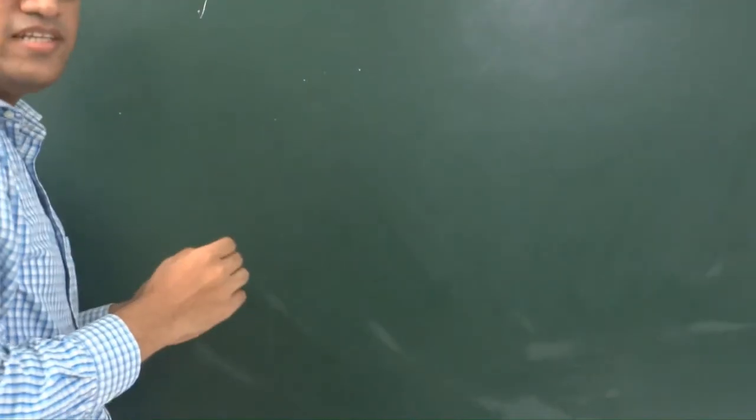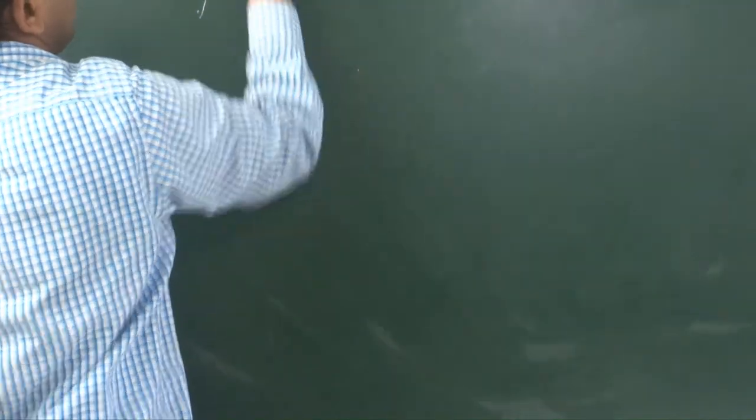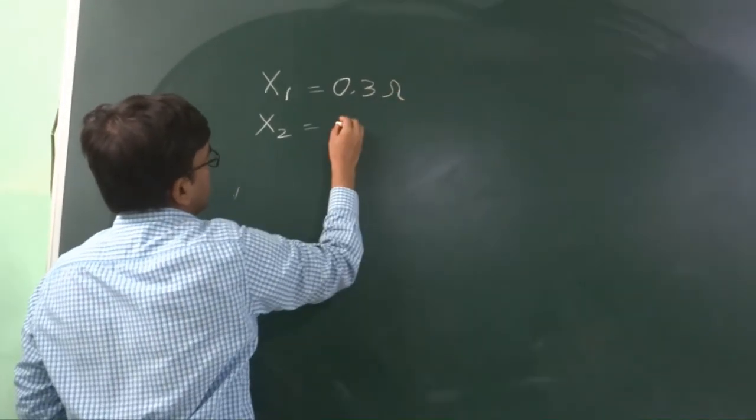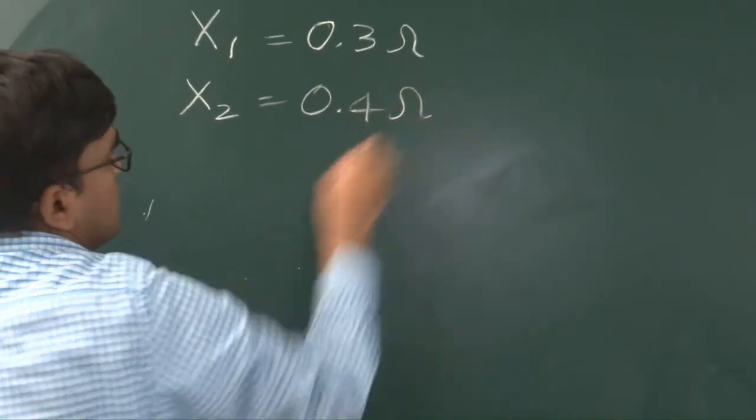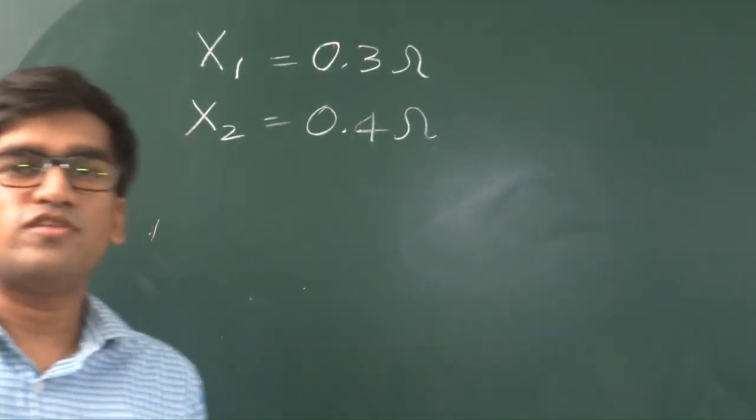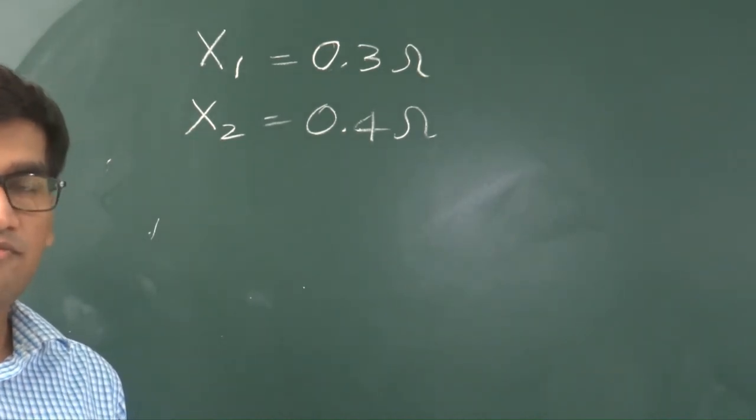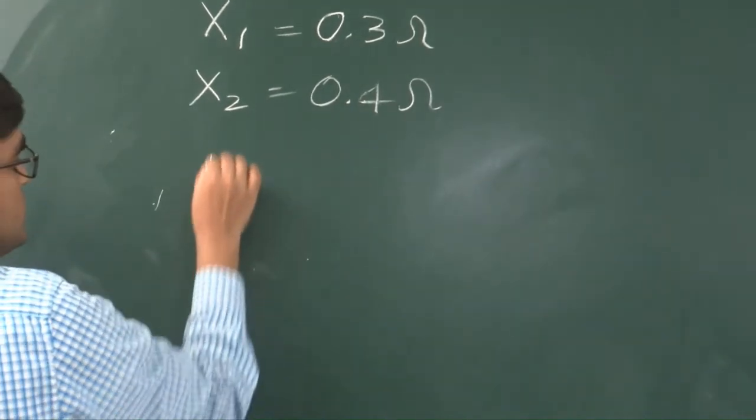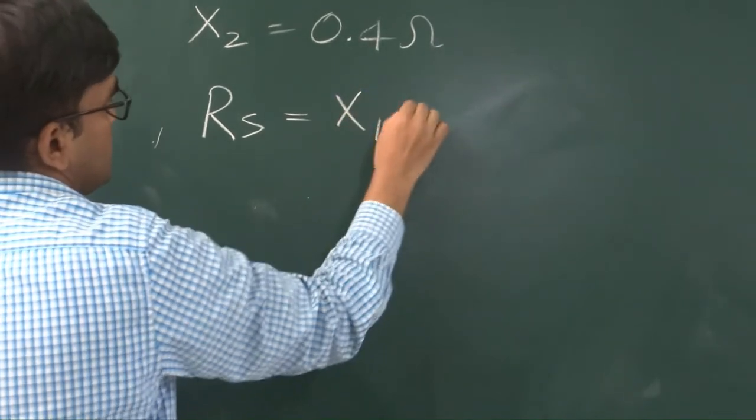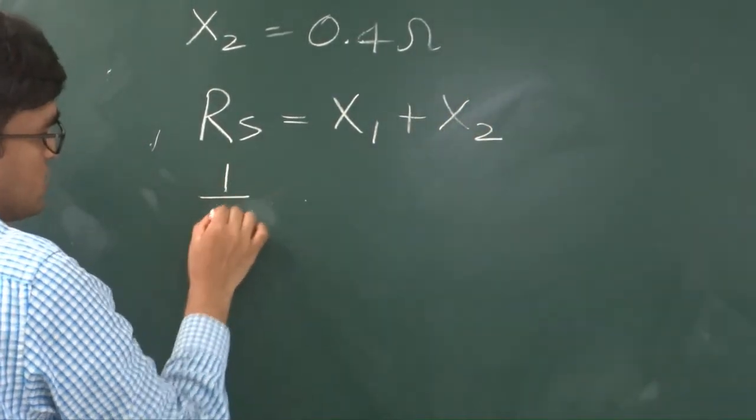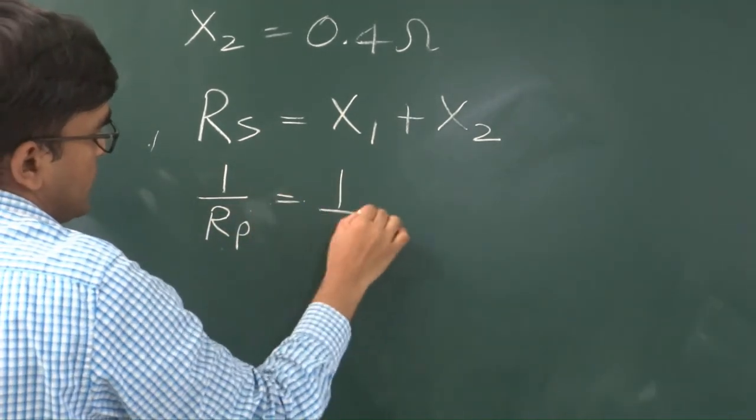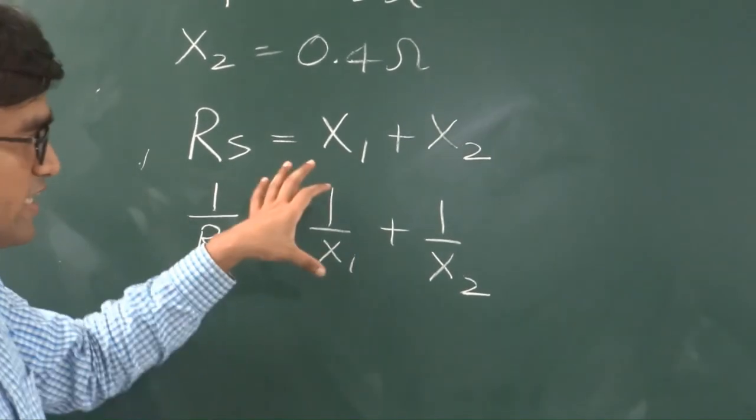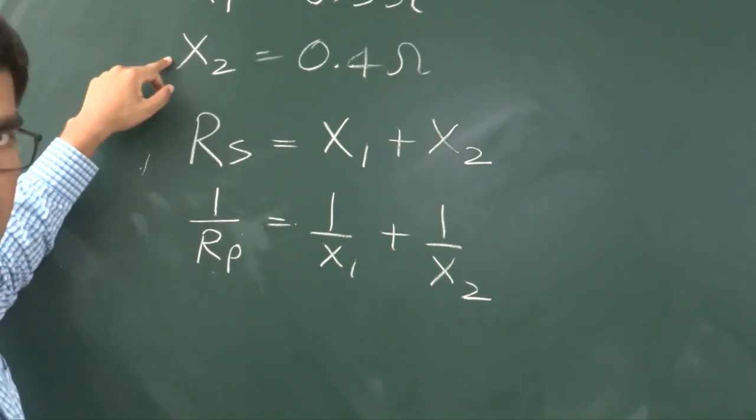Since we have determined the values of the two unknown resistances that is x1 and x2 and these come out to be 0.3 ohms and 0.4 ohms. Now as I have discussed in the experiment how to determine the value of the series and parallel combination, the values that you are getting from the apparatus you can compare it with the theoretical value. That is, Rs which is equal to x1 plus x2 and the parallel value that is 1 over Rp is equal to 1 by x1 plus 1 by x2. Verify that the values that you are getting from here using the initial two readings is the same as you are getting from the third and the fourth set.